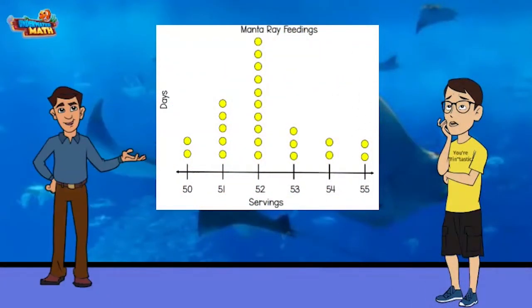Here is the serving count for the month of February. February has 28 days, but we are closed on Sundays. So this dot plot has 24 data points. Each dot represents one day and the amount of servings sold on that day.